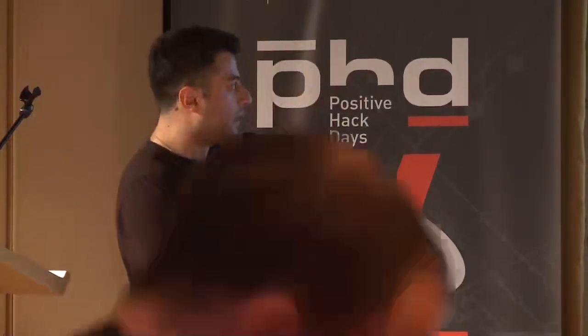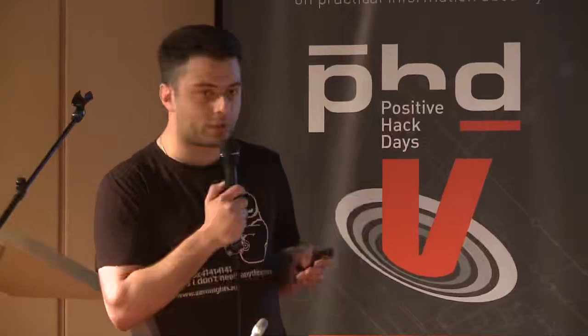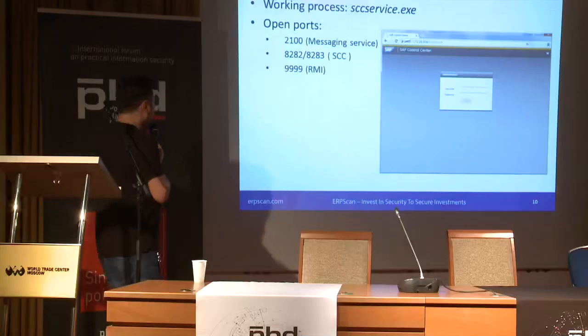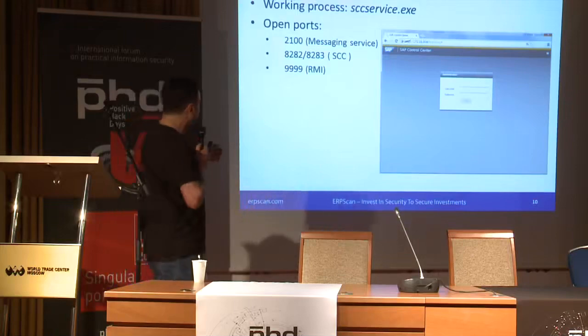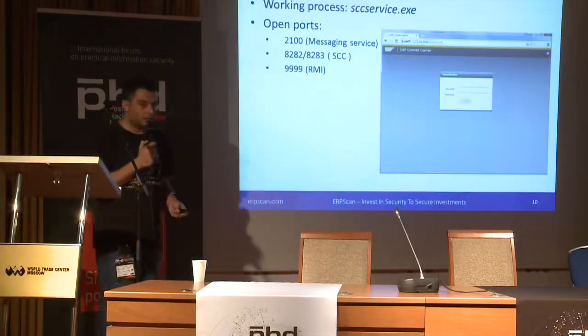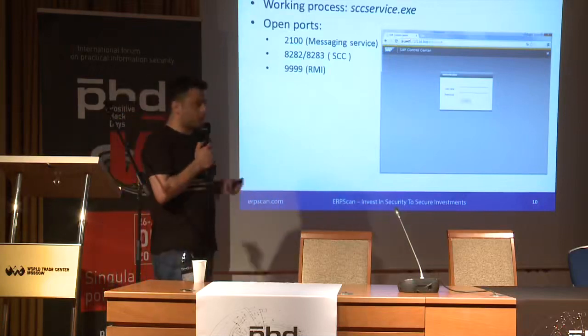SAP Mobile Platform consists of three main services. The first is SAP Control Center, which is a portal used by the admin to control SAP Mobile Platform. The working process is the SCC service, which has four main ports. Ports 2100 and 9999 are used inside these processes, and ports 8282 and 8283 are used for HCP protocol connections to the portal. Port 8282 uses HTTP by default and redirects calls to HTTPS on port 8283.